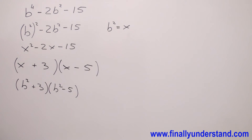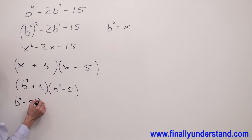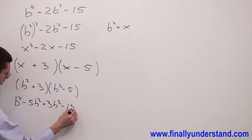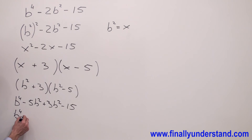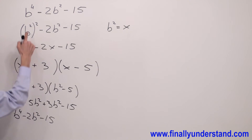Let's check if this is the correct solution. Simply multiply: b squared times b squared equals b to the fourth. b squared times negative 5 is negative 5b squared. 3 times b squared is positive 3b squared. 3 times negative 5 gives me negative 15. So b to the fourth minus 5b squared plus 3b squared equals negative 2b squared minus 15.